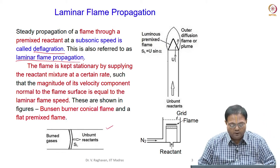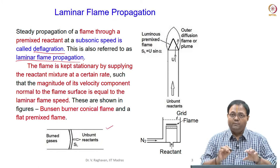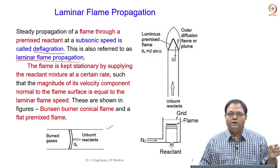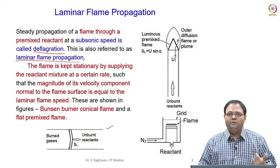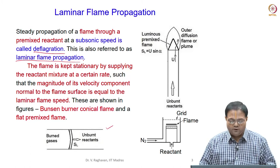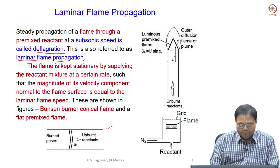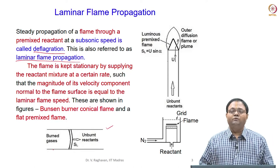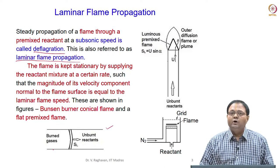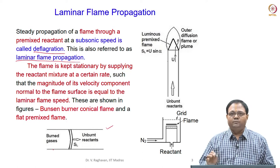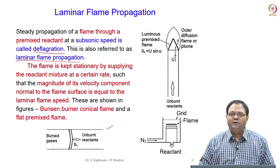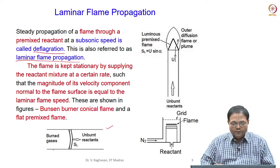When the same setup was closed and ignited at the closed end, the flame actually accelerates and subsonic to supersonic speeds can be achieved — that was called detonation. In normal domestic and industrial applications we seek premixed flames with subsonic velocities. Only in special applications like pulse detonation engines do we go for detonation type combustion.